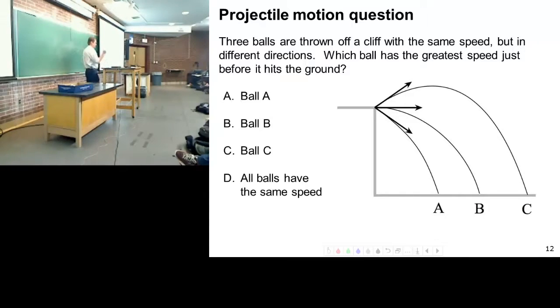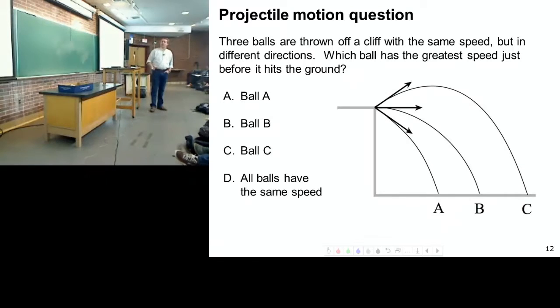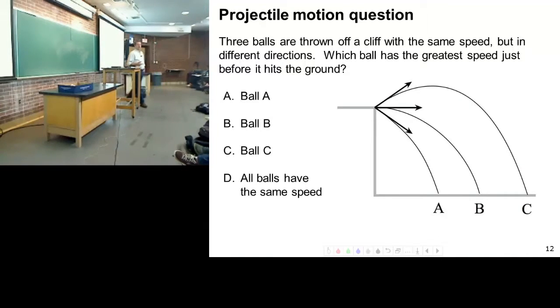So three balls are thrown off a cliff with the same speed, 20 meters per second let's say, but in different directions. Which ball has the greatest speed just before it hits the ground? So one's thrown up, one's thrown horizontal, one's thrown down.